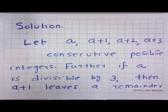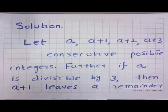On the other hand, if a is not divisible by 3 but leaves a remainder 1 when divided by 3, then a plus 2 will be exactly divisible by 3, and so on.